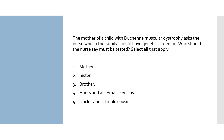Here's the last question. The mother of a child with Duchenne muscular dystrophy asks the nurse who in the family should have genetic screening. Who should the nurse say must be tested? Select all that apply. Number one: mother. Number two: sister. Number three: brother. Number four: aunts and all female cousins. Number five: uncles and all male cousins. This question requires you to know how muscular dystrophy is inherited — specifically what chromosome the disease is carried on and whether it is recessive or dominant. Look at each answer individually.